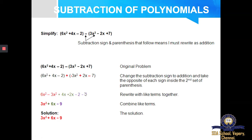6X square and 3X square alone are the like terms — this is what you are supposed to add or subtract with. So we write the solution.